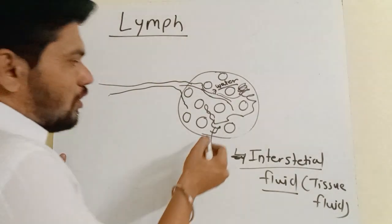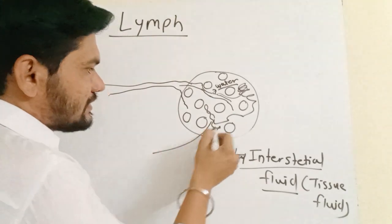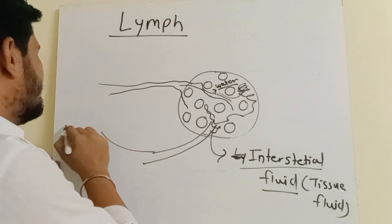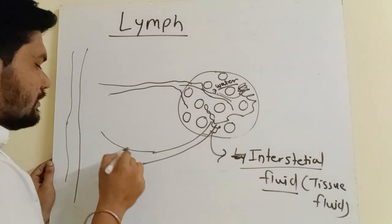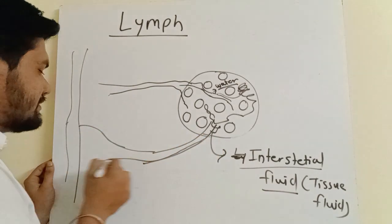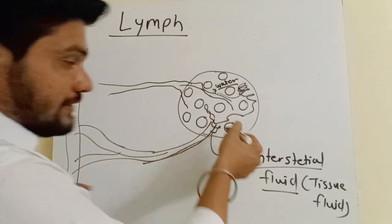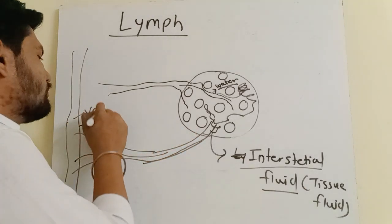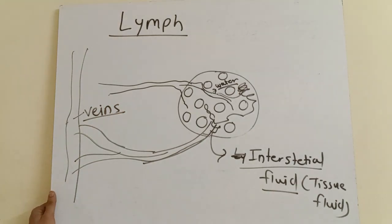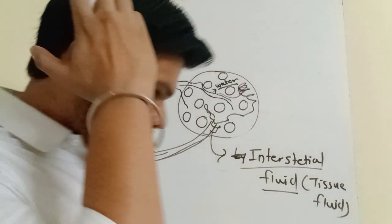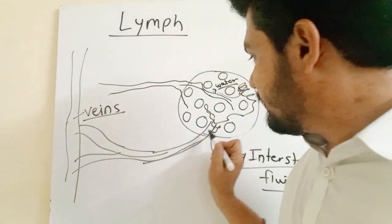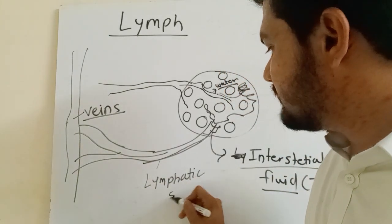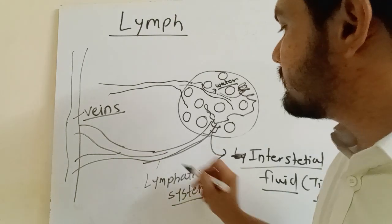There is a system called the lymphatic system which collects this interstitial fluid and sends it into the major veins of the body. This fluid which is collected by the lymphatic system is called lymph.